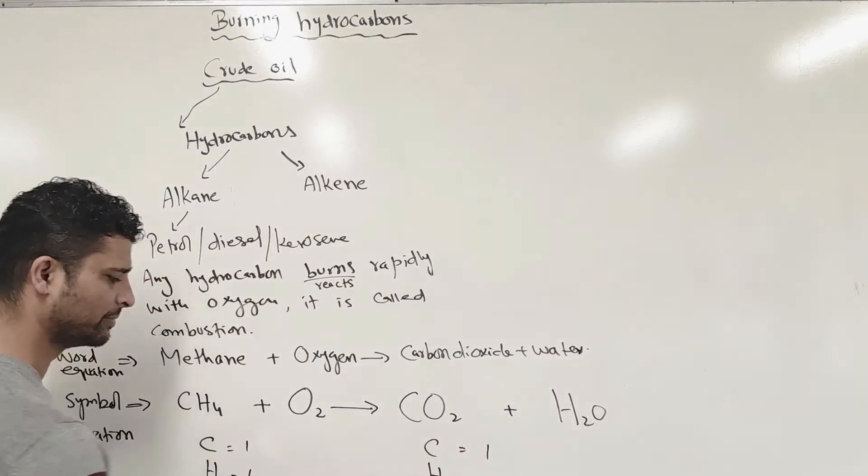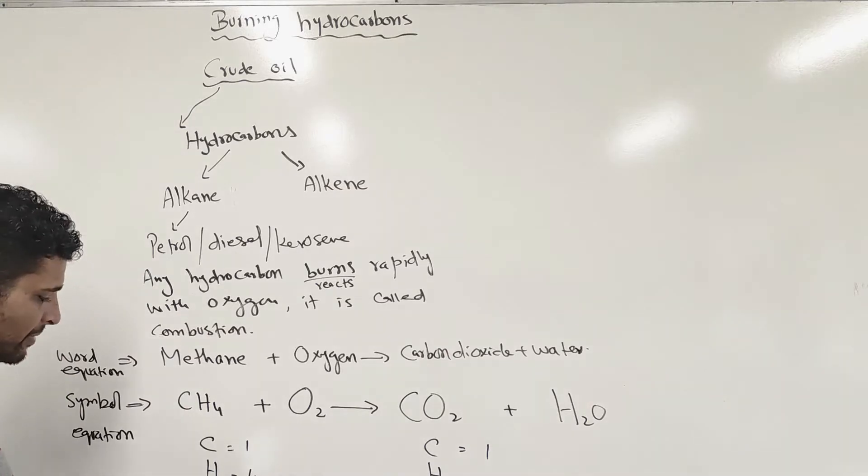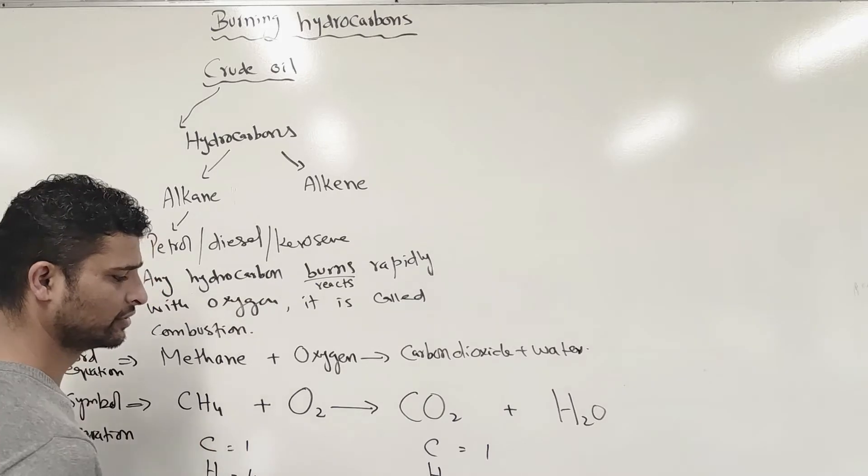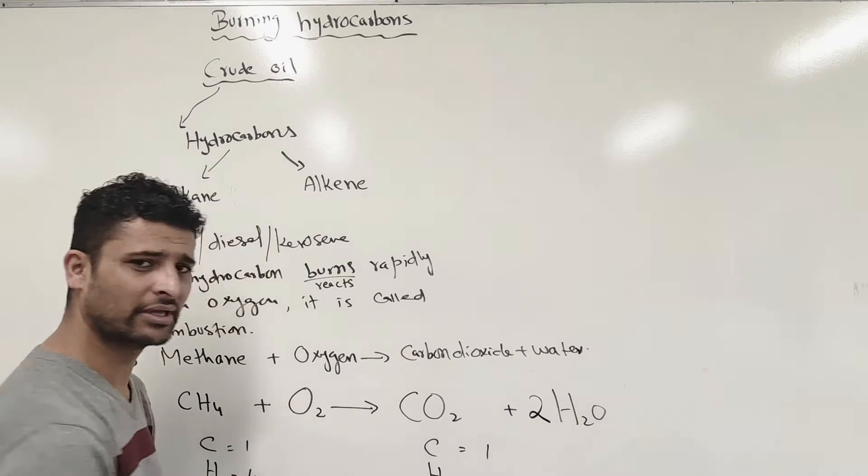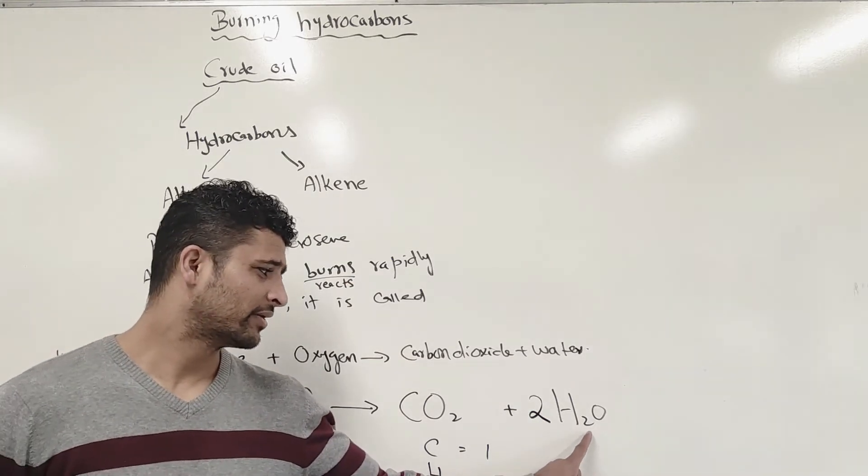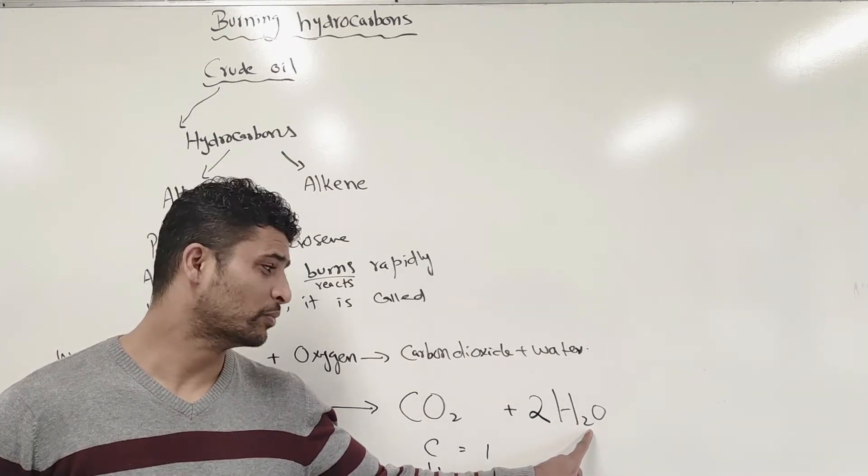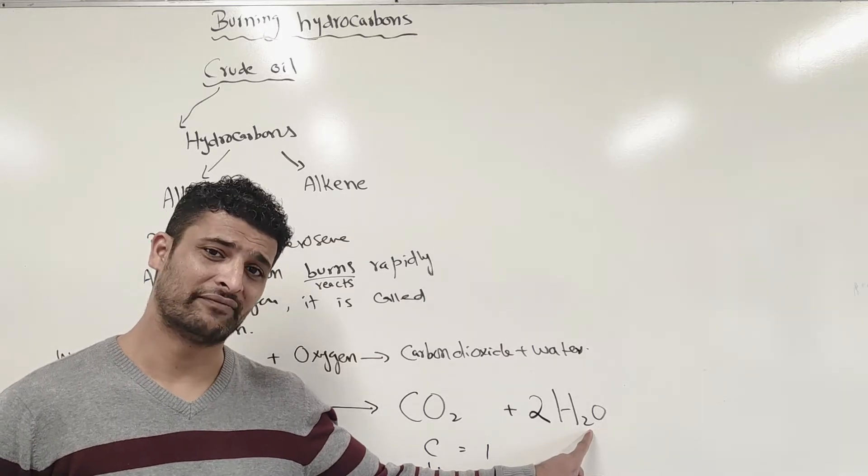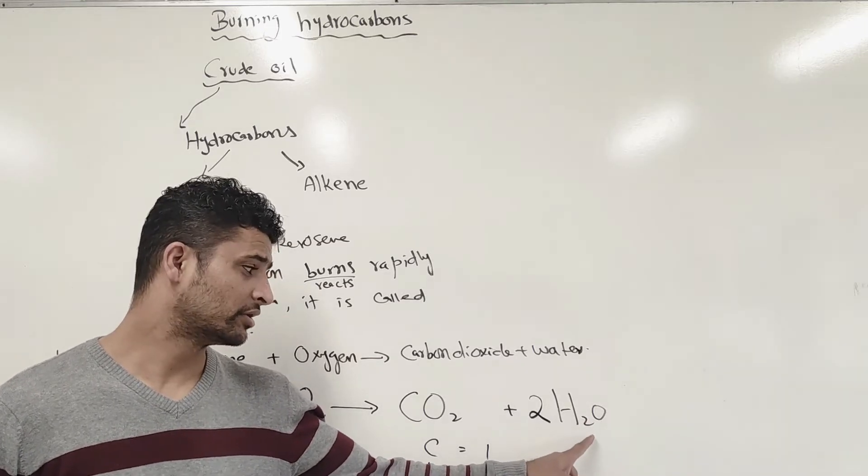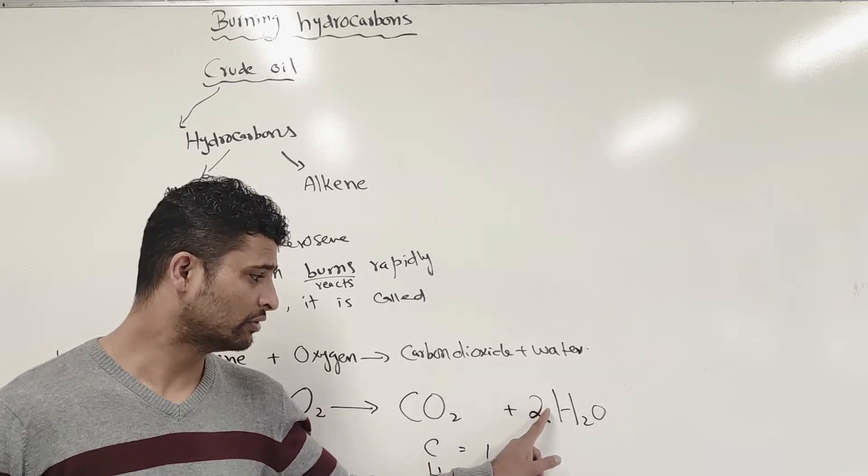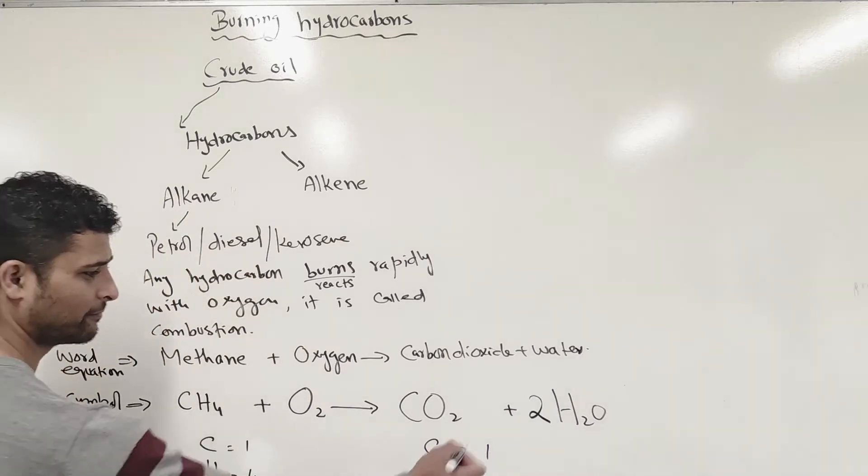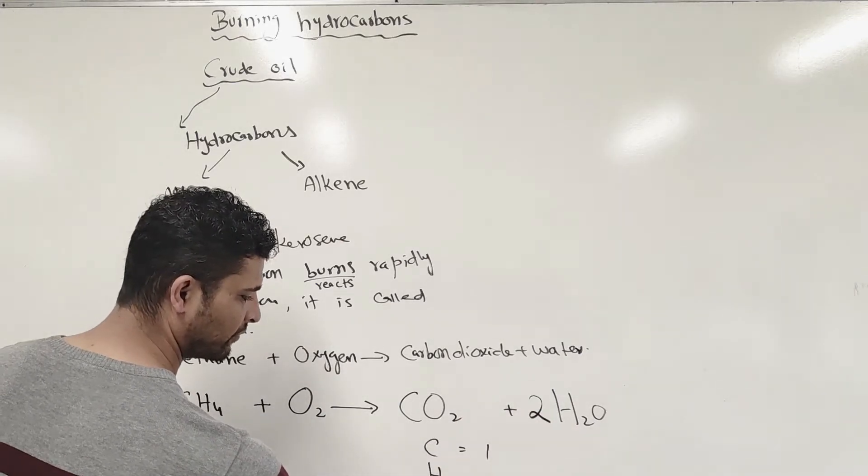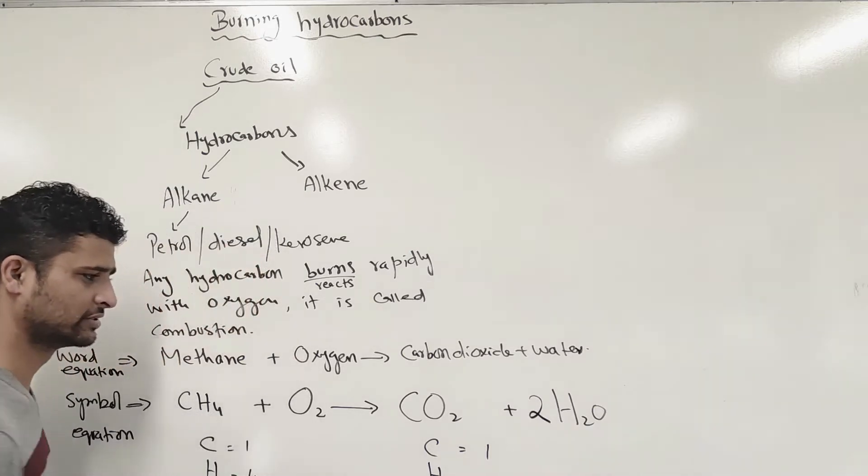I'm trying to balance carbon. Carbon is already balanced, so I don't have to worry about that. Then I look at hydrogen. You have four and you have two there, so I put two there. You cannot change this subscript number. If you change it, you'll change the formula of the molecule, which you're not allowed to do. You can only change the coefficient in front to balance the equation. I've put that number there, making it four hydrogens now.